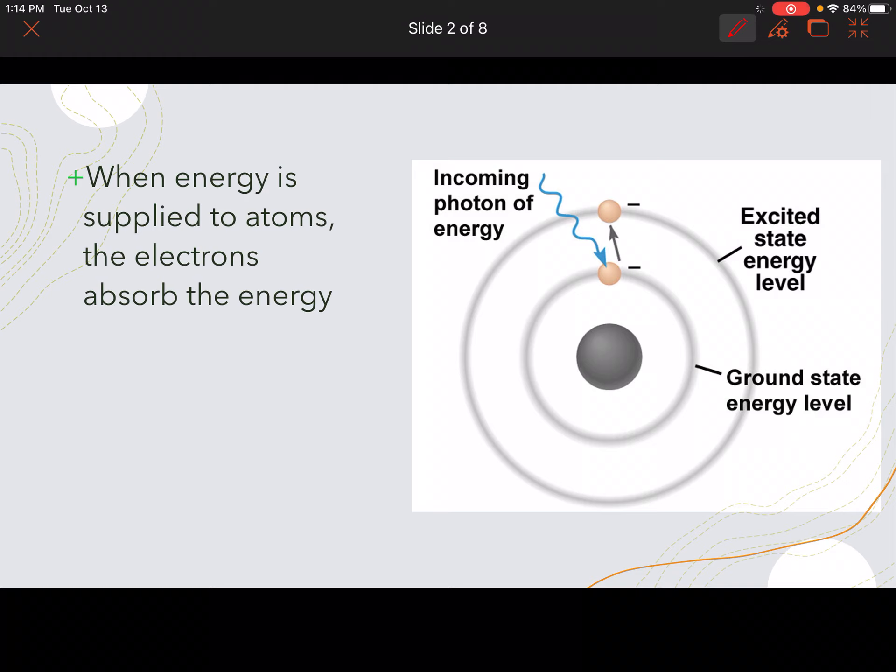Now first thing here. When energy is supplied to atoms, the electrons are going to absorb the energy. As you can see here, we've got an incoming photon of energy. So this is our energy coming on. The electrons are going to absorb that.